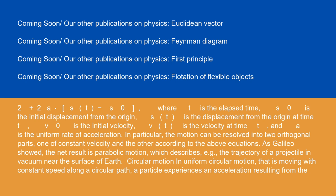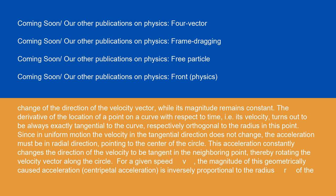In circular motion — that is, moving with constant speed along a circular path — a particle experiences an acceleration resulting from the change of the direction of the velocity vector, while its magnitude remains constant. The derivative of the location of a point on a curve with respect to time (i.e., its velocity) turns out to be always exactly tangential to the curve, respectively orthogonal to the radius at this point. Since in uniform motion the velocity in the tangential direction does not change, the acceleration must be in the radial direction, pointing to the center of the circle.